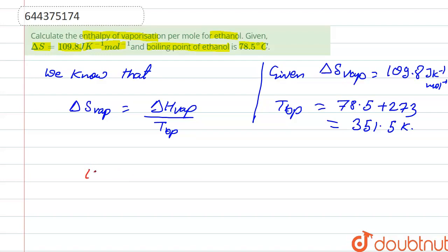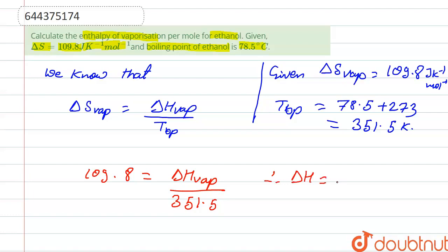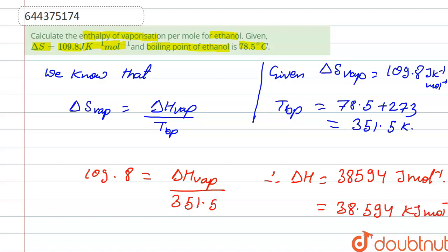109.8 is equal to delta H of vaporization divided by 351.5. After solving, we get delta H equal to 38,594 joule per mole, which we can write as 38.594 kilojoule per mole. This is the value of enthalpy of vaporization per mole for ethanol.